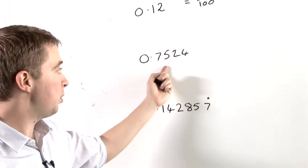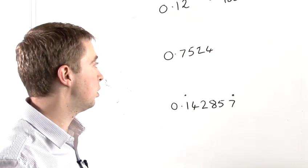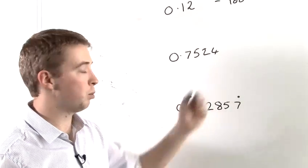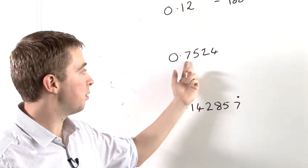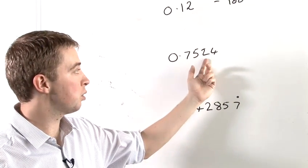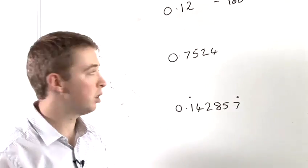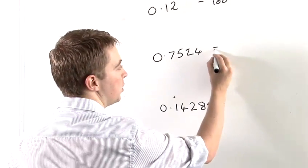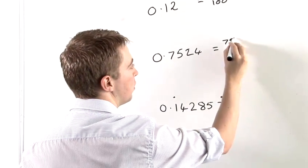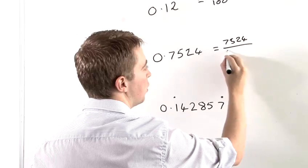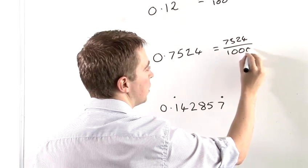So let's do a similar thing with this decimal now. In fact, you can see that we have four decimal places. So we have tenths, hundredths, thousandths, and ten thousandths. So this is going to be equal to 7524 over 10,000.